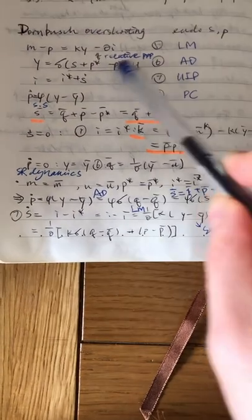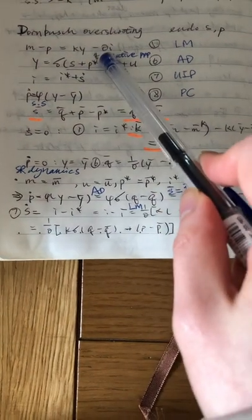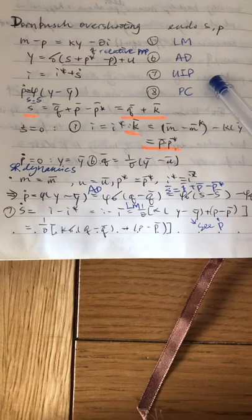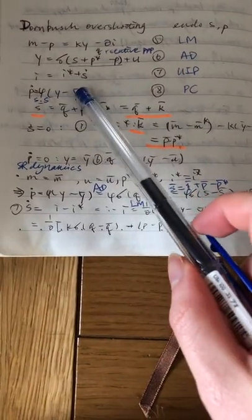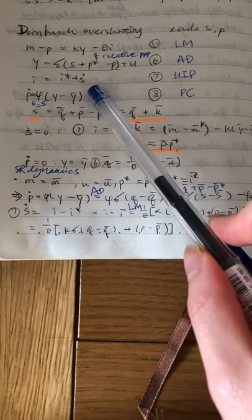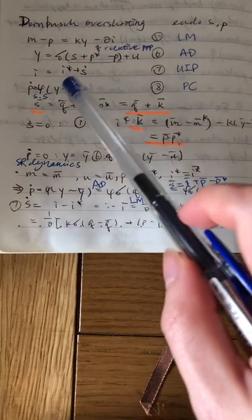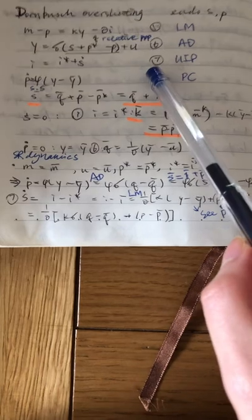And if we assume relative PPP, then this will be equal to Q, which is the real interest rate. And then we have UIP, which is a function of interest rate and the nominal exchange rate. And then Phillips curve, which is a function of Y and P, but there is no shock in the Phillips curve.